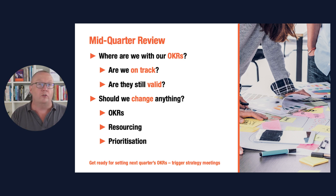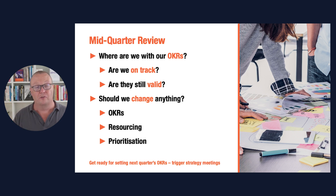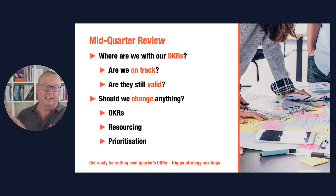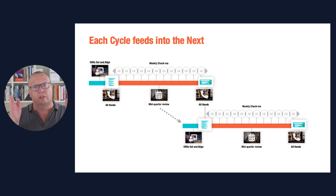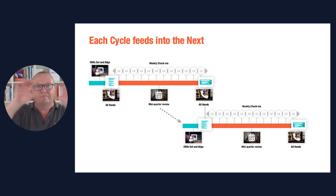In this mid-quarter review, because you now know where you've got to so far and have a fair idea of where you're going to get by end of quarter, you're well prepared to set the next quarter's OKRs. This may require triggering off some strategy and other planning meetings and setting up the next OKR cycle to set OKRs and do planning in the second half of the quarter. So the mid-quarter review fits into the weekly cadence — you have the setting and aligning process, then the all hands, then the mid-quarter review with the weekly execution cadence, before the all hands at the end. In the next video, I'll talk about how OKR cycles fit together.